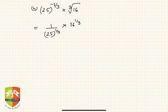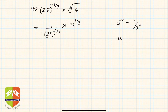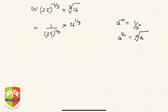The rules being used are: a to the power minus n equals 1 upon a to the power n, and a to the power 1 by n is the nth root of a. Combining these, we get 16 by 25, both to the power 1 by 3, using the rule (a/b)^n = a^n / b^n and vice versa.